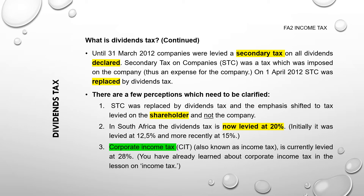Shareholders will only receive the portion of the dividend after tax has been deducted by the company, and then the tax will be paid over by the company to the revenue service. Initially when dividends tax came into effect in 2012, it was levied at 12.5%. A few years after that it was raised to 15%. Currently it is levied at 20%, which is still lower than an income tax rate.